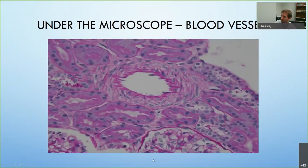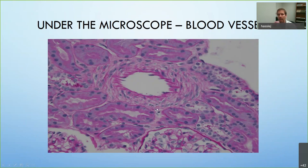Next, the blood vessels. This is a larger artery — different from the capillaries. You can see the endothelial cells that line it, plus smooth muscle cells and fiber cells that wrap around it to handle the pressure coming through. If there's damage here, sometimes these blood vessels can't handle the pressure.